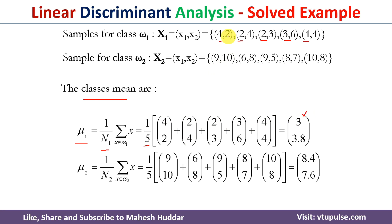Similarly, we add the second feature values: 2, 4, 3, 6, and 4, divided by 5, which equals 3.8. So mu1 is (3, 3.8). We also calculate the mean for the second class, which gives 8.4 for the first feature and 7.6 for the second feature. So mu2 is (8.4, 7.6).